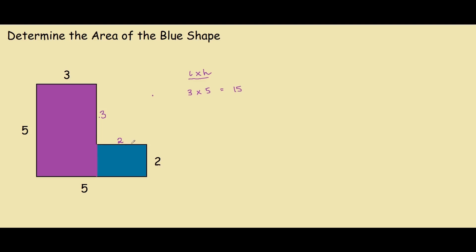To work out the area of the blue rectangle, the length is 2 and the height is also 2. So this is 4.